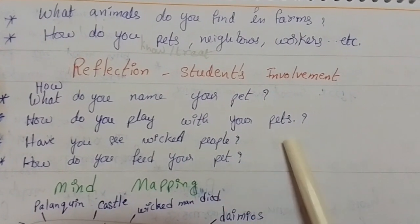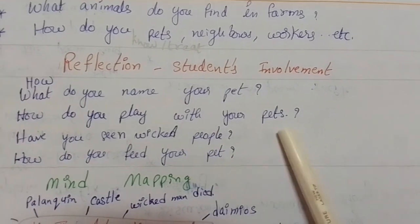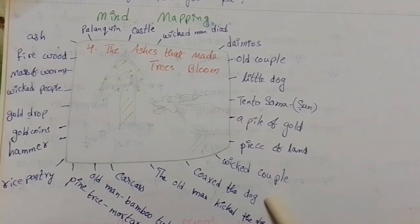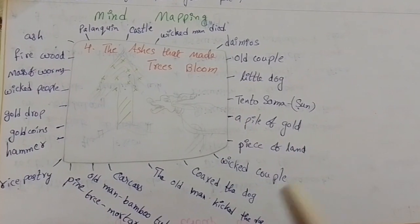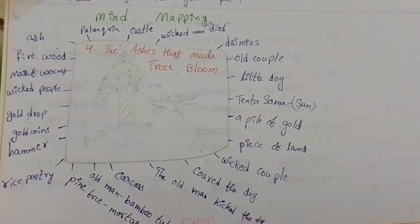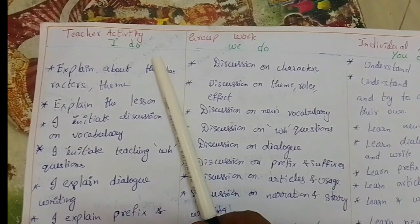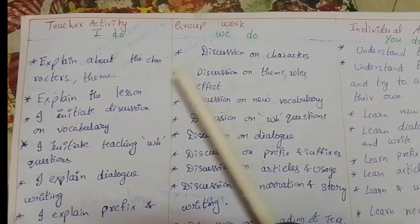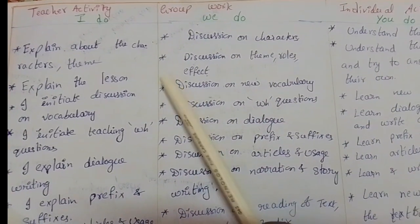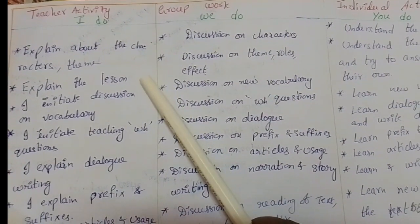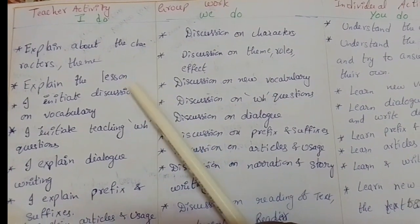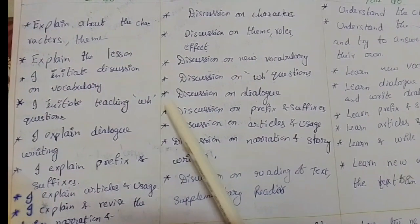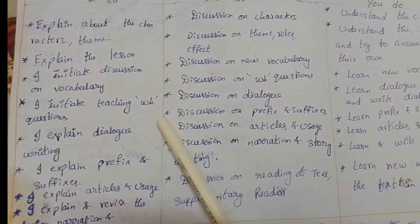We ask: how do you play with your pets, how do you feed your pet. In mind mapping we give the concepts of the fourth lesson. Next, for teacher activity, group work, and individual activity — I do, we do, and you do.